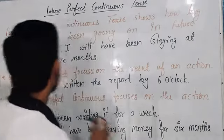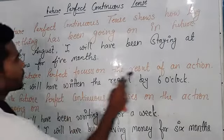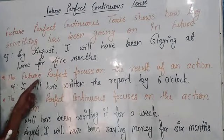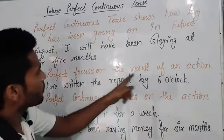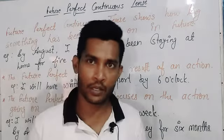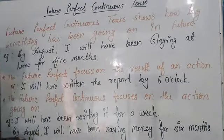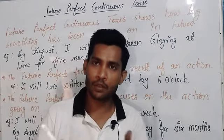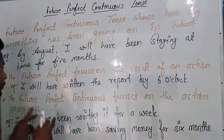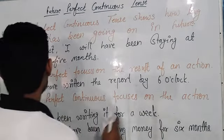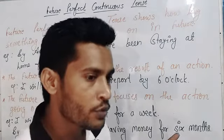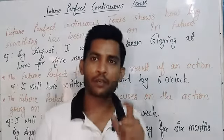The future perfect tense focuses on the result of an action. Like in future perfect I gave you the example: 'By August, I will have saved five hundred dollars' — our focus was on saving money. But the future perfect continuous tense focuses on the action going on. Remember, in future continuous tense it shows only the running of an action in future.